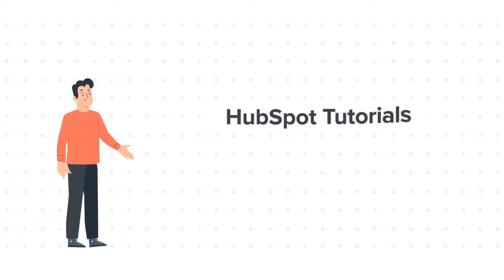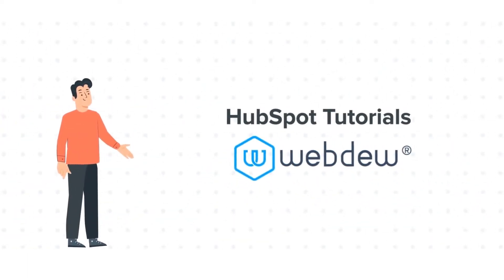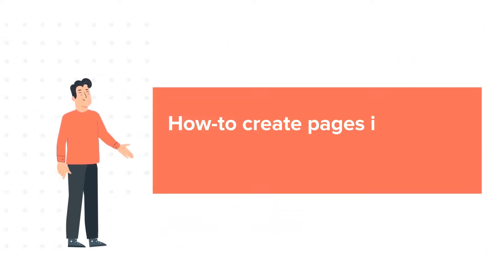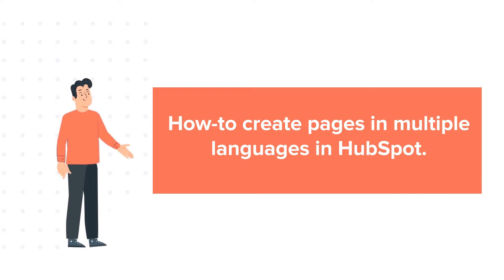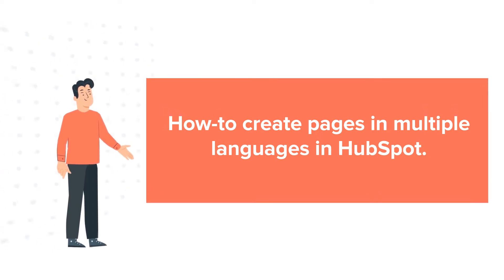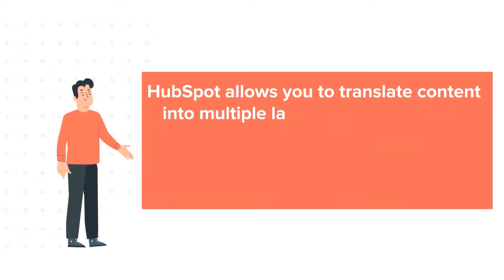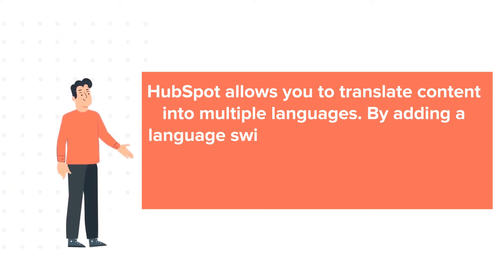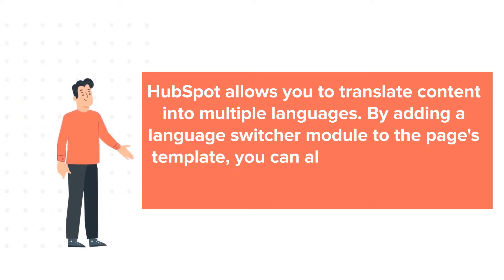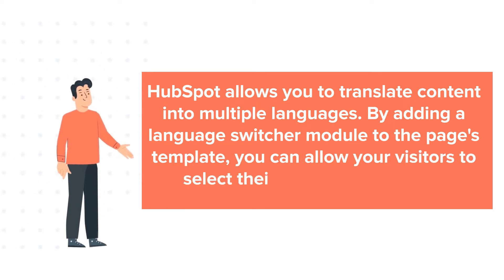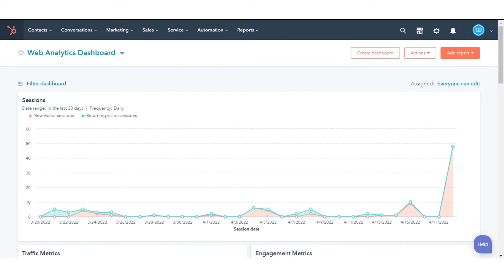Hello and welcome to HubSpot tutorials by Webdo. This is Bob and today's tutorial is about how to create pages in multiple languages in HubSpot. HubSpot allows you to translate content into multiple languages. By adding a language switcher module to the page template, you can allow your visitors to select their preferred language. Let's see how to do this.